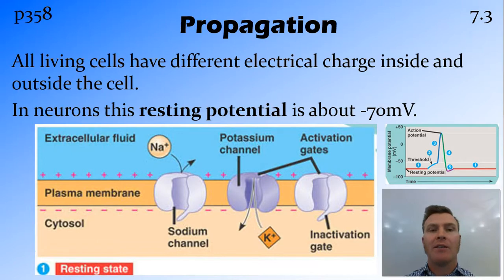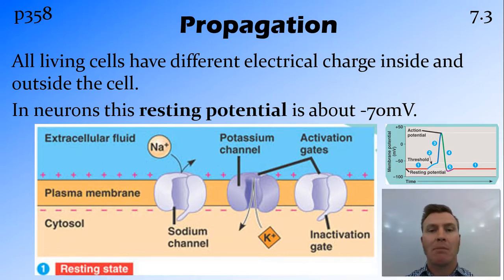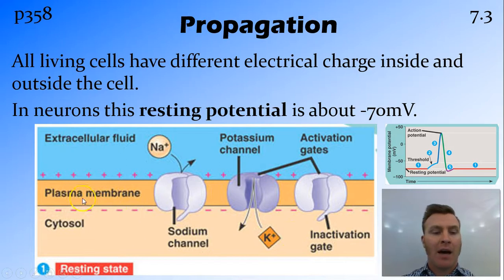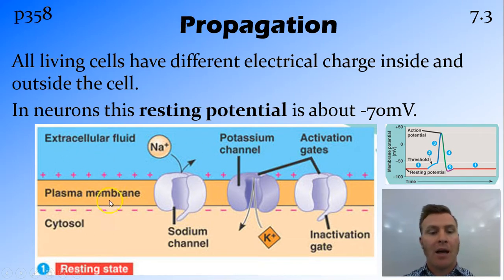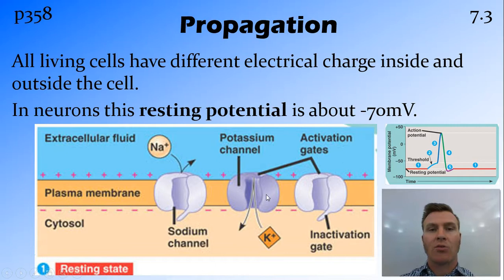Living cells have different charges inside and outside them because of the different concentration of ions — in particular sodium (Na+) and potassium (K+). In this diagram, we have the extracellular fluid outside the neuron, the cytosol inside the neuron, and the plasma membrane surrounding it. Think of this as somewhere along the axon, with the inside at the bottom and the outside at the top. Across the plasma membrane are voltage-gated sodium channels as well as potassium channels — proteins that sit across the plasma membrane and allow ions to move through them because of their three-dimensional structure.